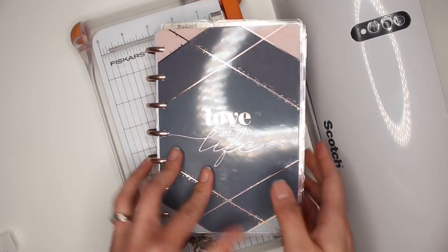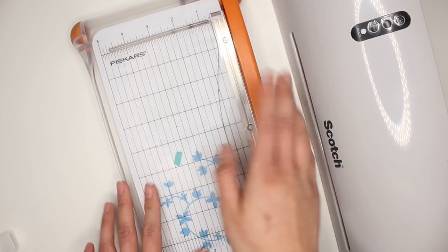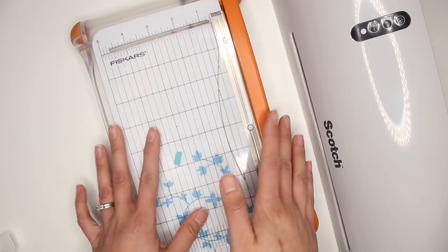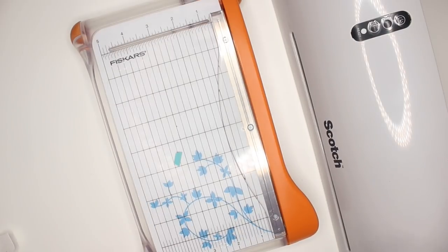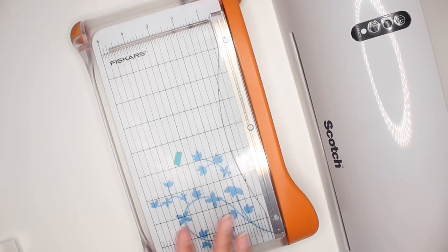So what you basically need today is a laminator, a blade such as this or any type of cutting tool, laminating sheets or laminating paper, and either a disc punch for the mini happy planner or just a regular hole punch. And really you just need paper, some cardstock.